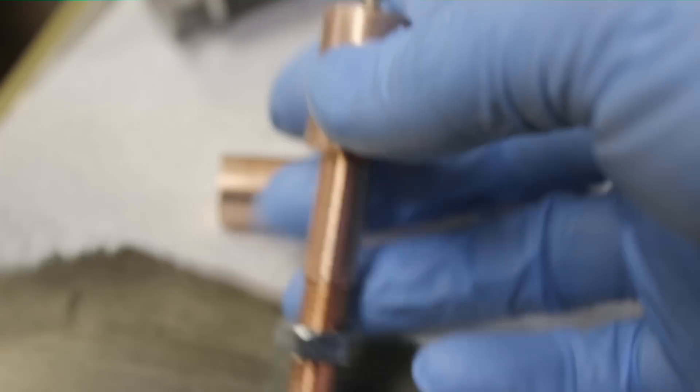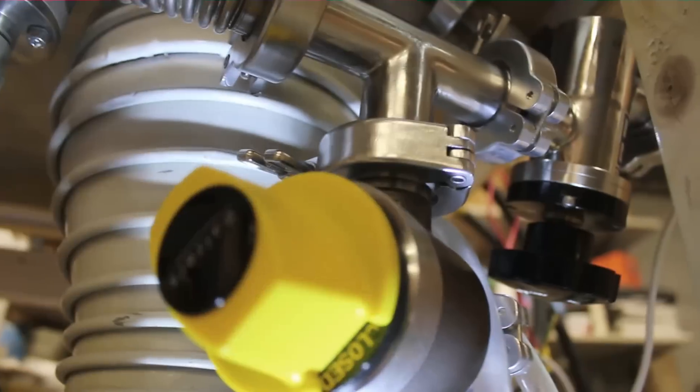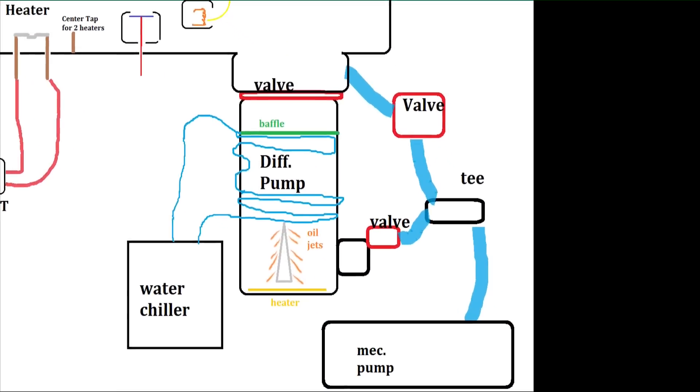I went over to my buddy's house and lathed some copper parts for low voltage feed throughs. I put all the KF valves on. These let me pump the chamber down when the diffusion pump is still hot.